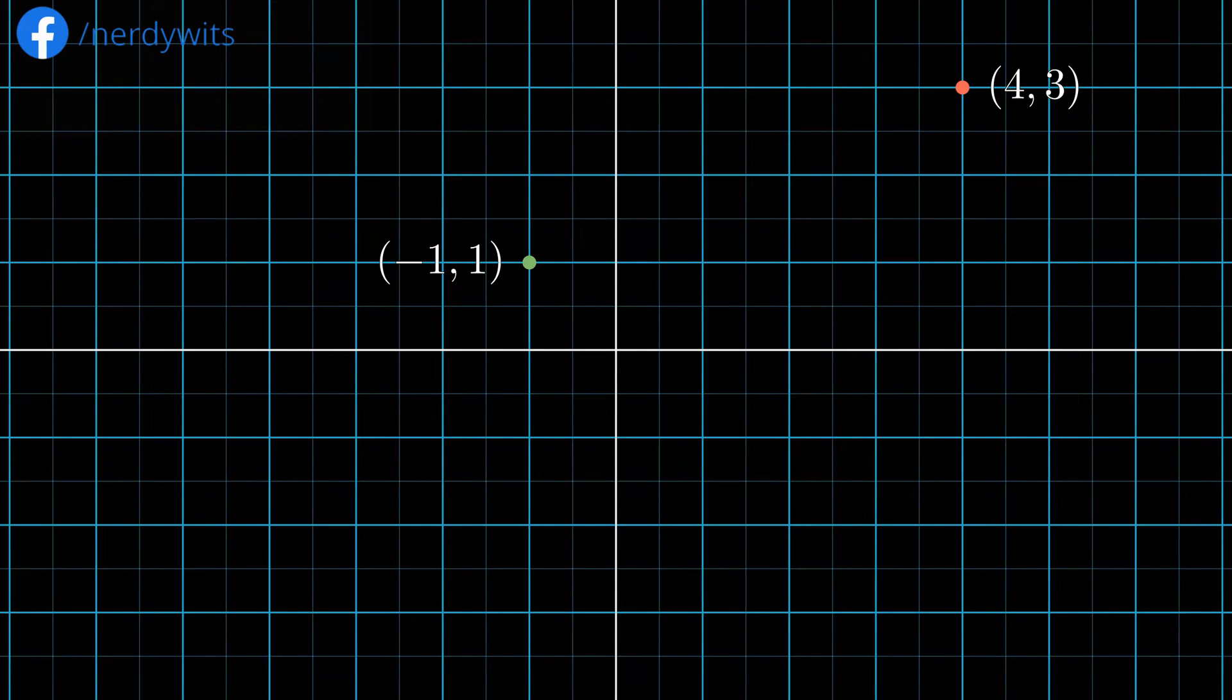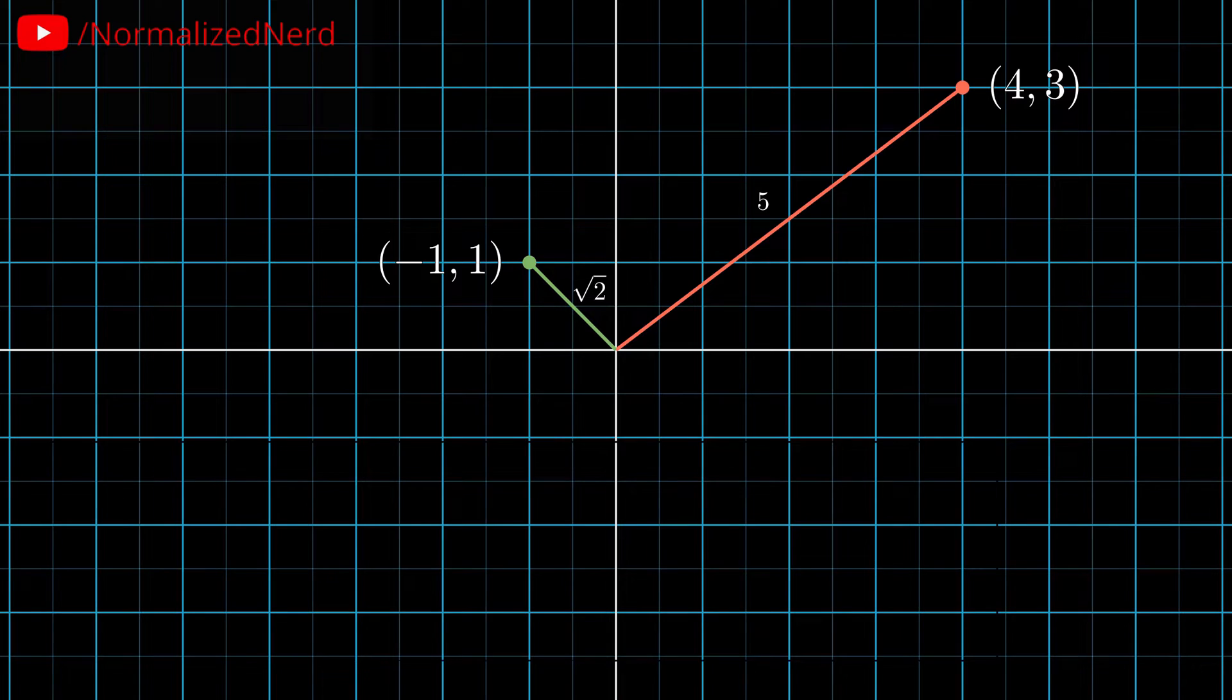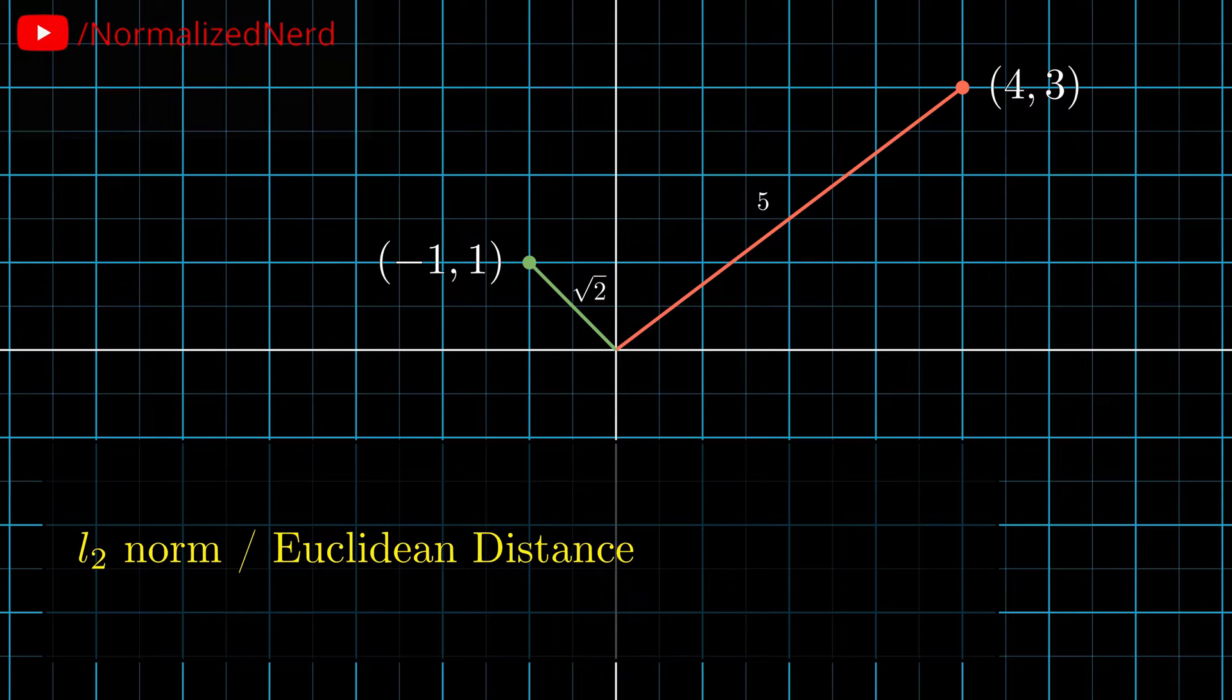So now, the question is how can we measure the size of the vectors? Well, the most intuitive thing, I guess, is to measure the distance of the points from the origin. For the vector A, the distance is 5 and for B, it's root 2. The thing that we just calculated is called the L2 norm. Yes, the Euclidean distance is the other name of L2 norm. As we all know, the formula looks something like this.